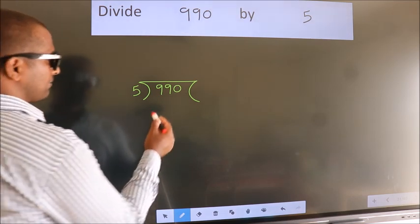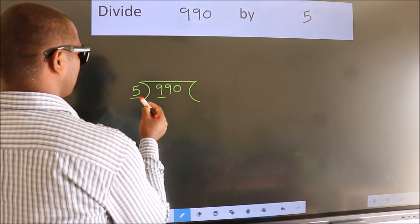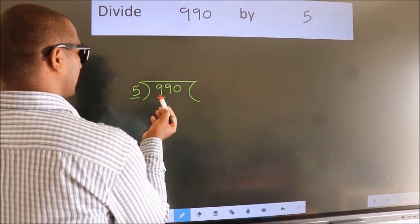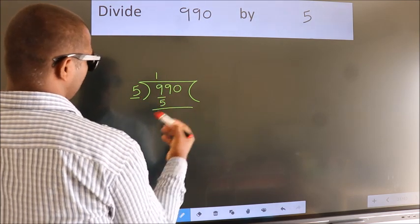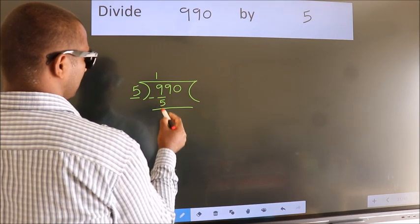Next. Here we have 9. Here 5. A number close to 9 in 5 table is 5 once 5. Now we should subtract. We get 4.